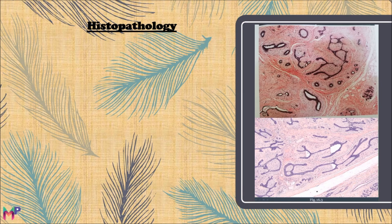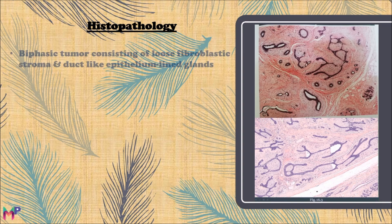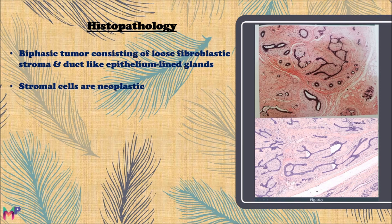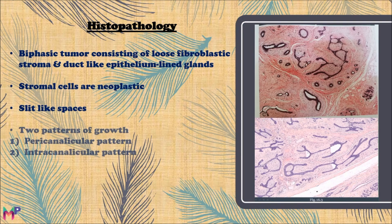Now let us discuss the histopathological features of fibroadenoma. Fibroadenoma is basically a biphasic tumor, consisting of two components: one is the loose fibroblastic stroma and the second is the duct-like epithelium-lined glands. It is the stromal cells that are neoplastic and divide, leading to tumor formation. Slit-like spaces can easily be seen in the histopathological picture. Two patterns of growth are seen: the pericanalicular pattern and the intracanalicular pattern, though these two patterns are of no clinical significance.